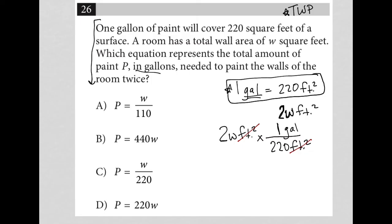I know that those 220 square feet is equivalent to one gallon of paint. So that goes in the numerator, which introduces the unit that I do want, gallons. So what I'm left with is 2W gallons over 220, which means if I were to simplify, I'd have 2 goes into 2 once. 2 goes into 220, 110 times. So I'd have W over 110.